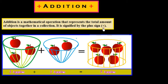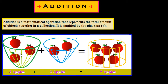Look at this picture. In this first bucket we have three apples: one, two, three. And in the second bucket we have two apples: one and two. If we have to find out the total number of apples, we transfer these two apples into this cylindrical bucket.